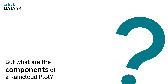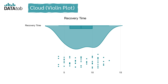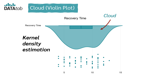But what are the components of a raincloud plot? The first component is the cloud. The cloud in the raincloud plot is a rotated and horizontally aligned kernel density estimation, similar to a violin plot, that shows the distribution density of the data.